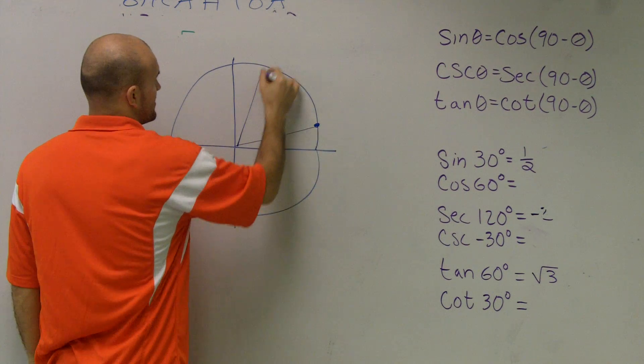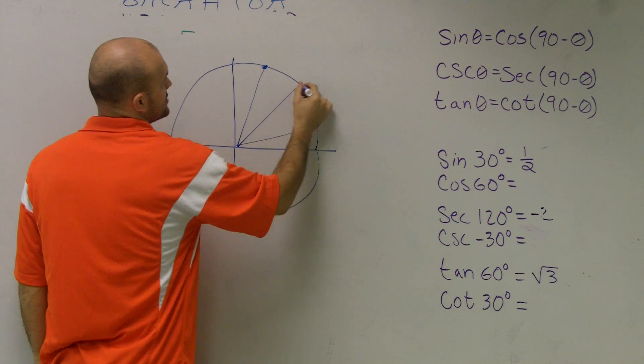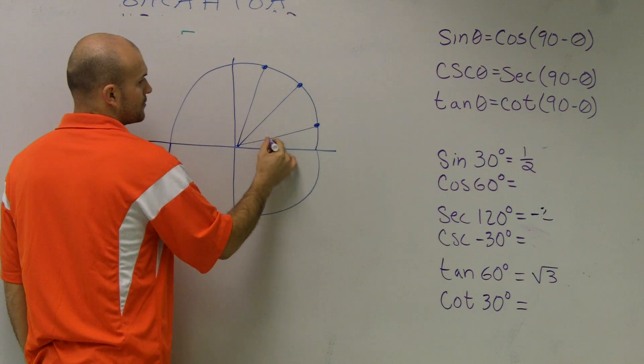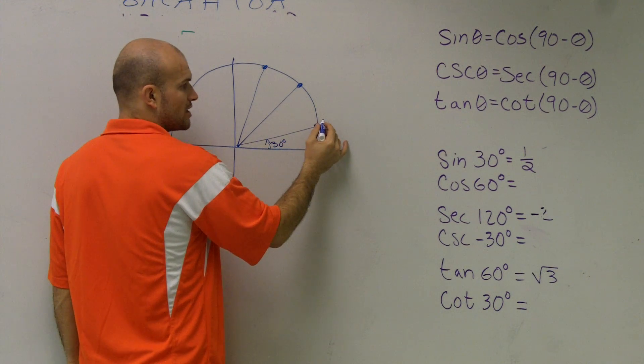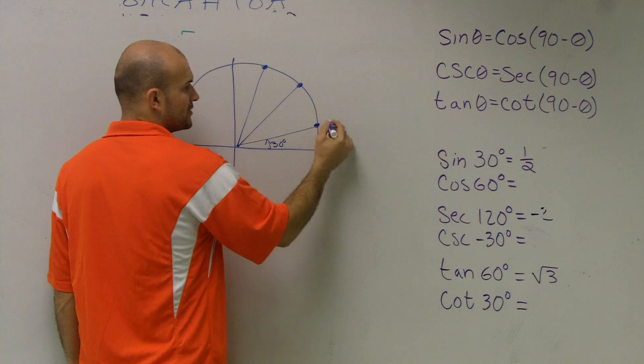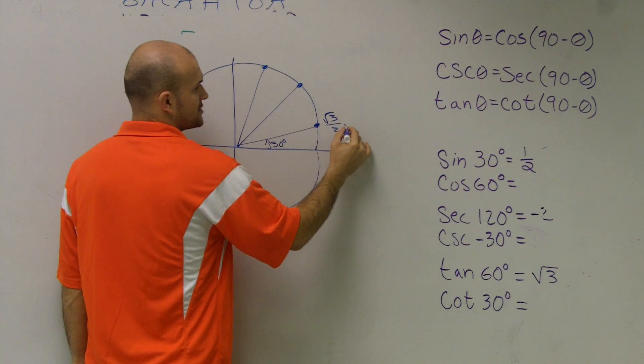There's three points I told you guys we need to make sure that we have memorized in our quadrant. First one was 30 degrees. This is on your unit circle. The x and y coordinate for our 30 degrees was square root of 3 over 2 comma 1 half.